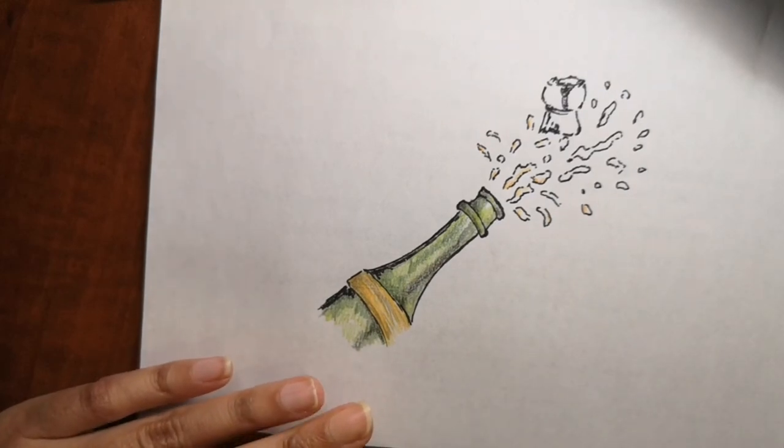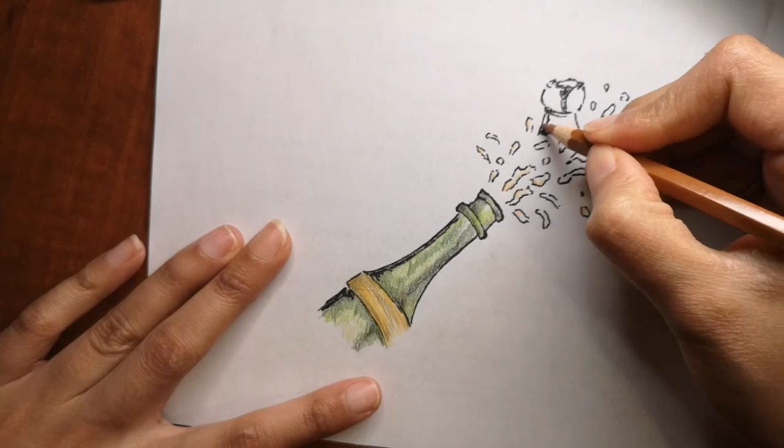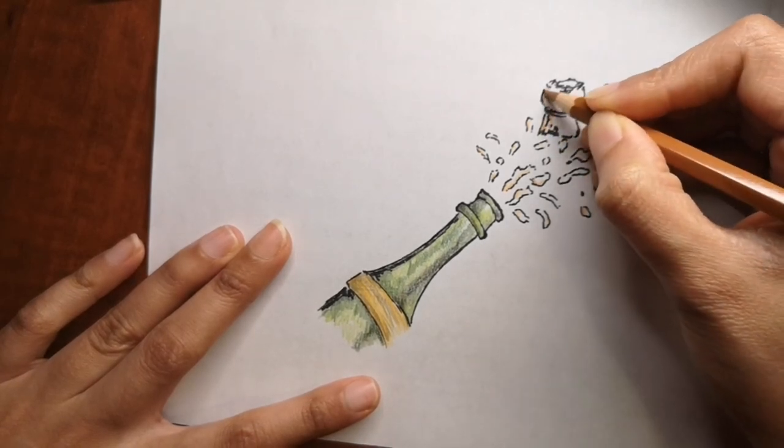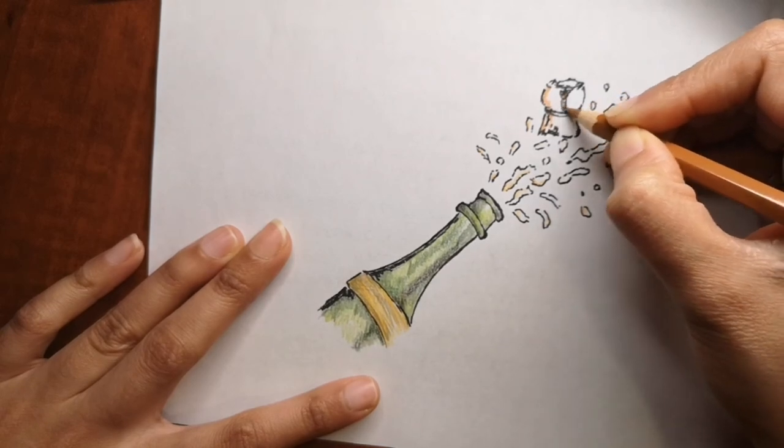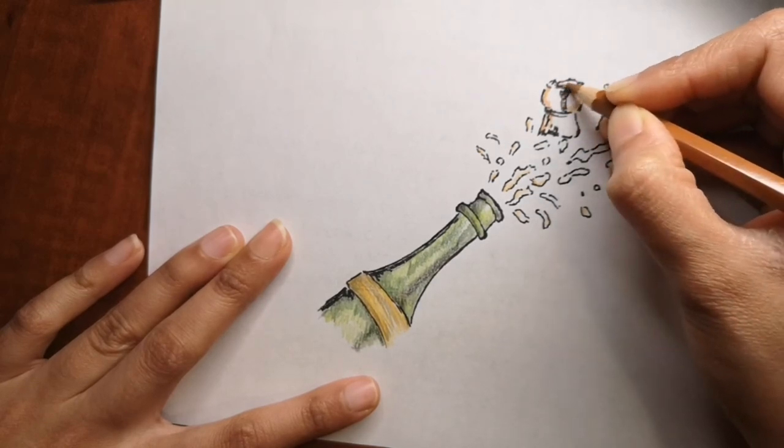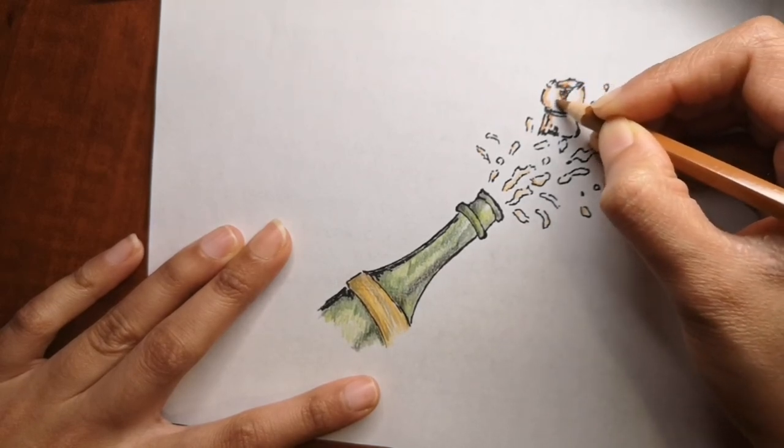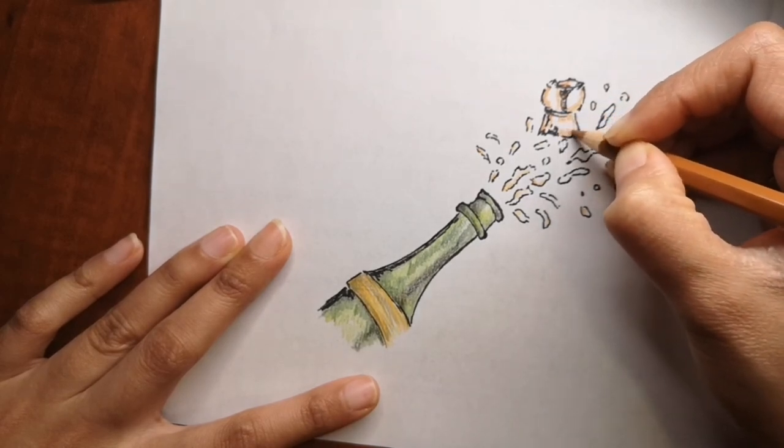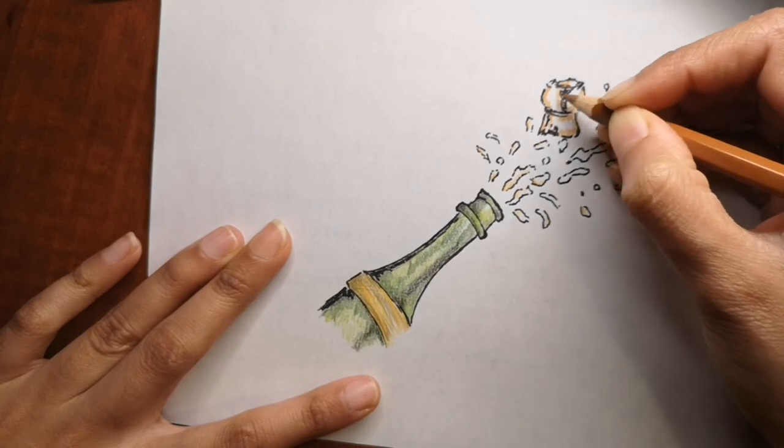The longest recorded cork flight was 177 feet and 9 inches. That's crazy! When popped, a champagne cork can reach a velocity of 24.8 miles per hour.